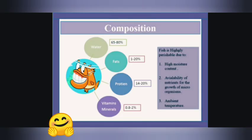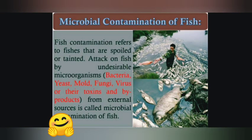Next, the composition of fish. Fish contains water, fat, protein, and vitamins with percentages of 65-80%, 1-20%, 14-20%, and 0.8-2% respectively. Fish have higher moisture content, availability of nutrients is high, and the temperature is quite suitable for microbial growth.